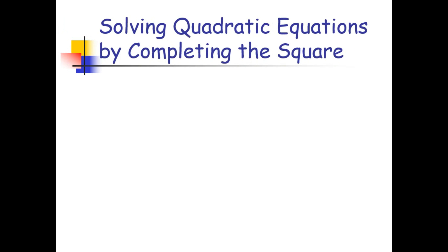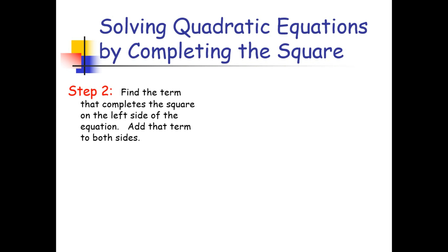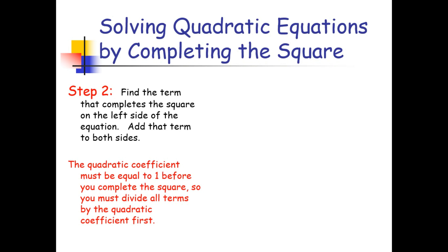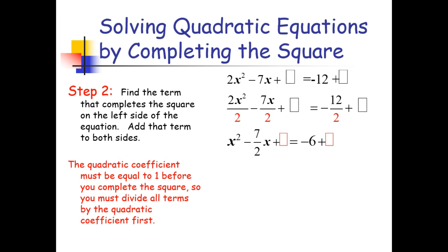For step 2, find the term that completes the square on the left side and add it to both sides. The quadratic coefficient must equal 1 before we complete the square, so we divide all terms by 2. That gives us x squared minus 7 over 2 times x on the left side, and negative 12 divided by 2, which is negative 6, on the right side.